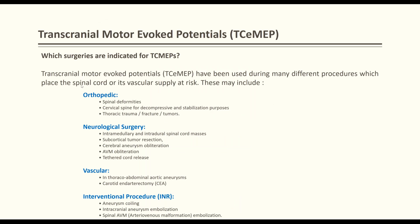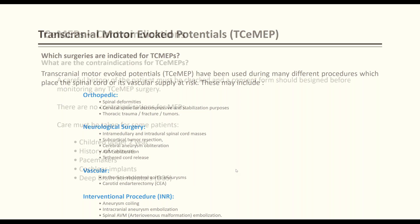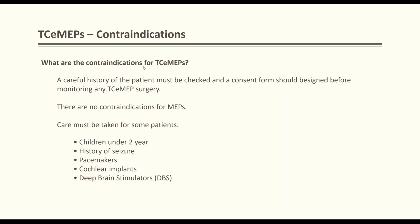MEP is beneficial in many types of surgery: orthopedic, neurosurgery, and vascular surgery. Beyond spinal cord and brain tumors, brainstem tumors, and subcortical tumors, MEP is very helpful in brain aneurysm surgery, AVMs, aneurysm clipping and coiling, AVM embolization, tethered cord release, thoracic and abdominal aneurysm repair, carotid endarterectomy, and interventional procedures such as coiling in the INR suite.